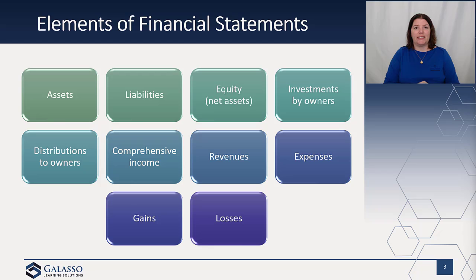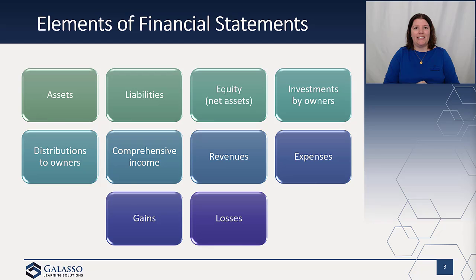They also address the concept of net assets, and they have investment by owners and distribution to owners as transactions that obviously impact equity. They also talk about comprehensive income. Nonprofits do not have comprehensive income because they have a statement of activities and not an income statement, so everything flows through the statement of activities. For for-profit entities, they address comprehensive income, and then there are revenues, expenses, gains, and losses.